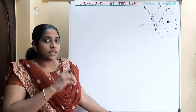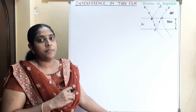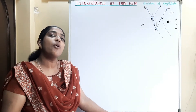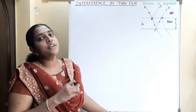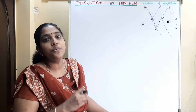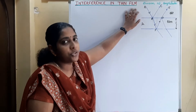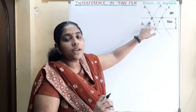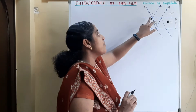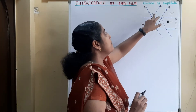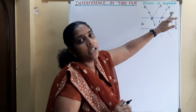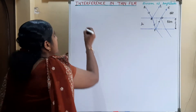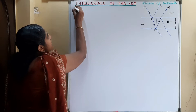Whereas in Young's double slit experiment, the interference produced is due to the division of wavefront. So interference in thin film is due to the division of amplitude. Here we are discussing the interference produced due to the superposition of reflected rays BC and DE — that is, we are discussing the reflected system.